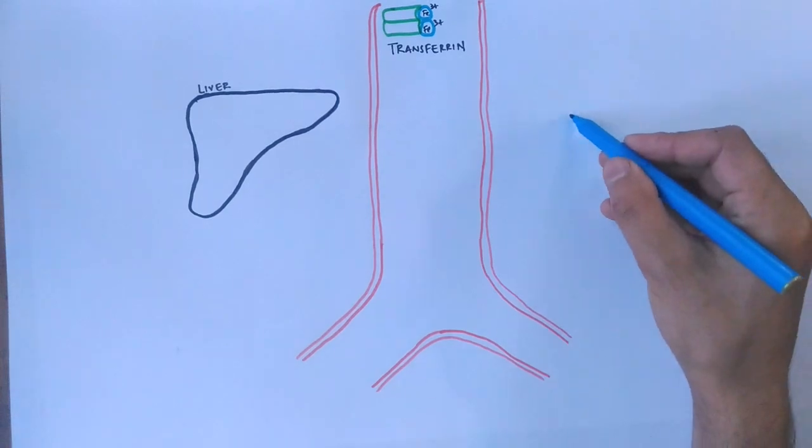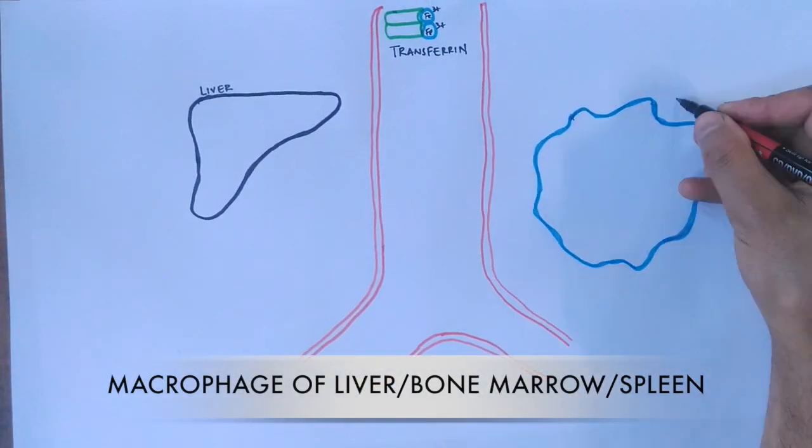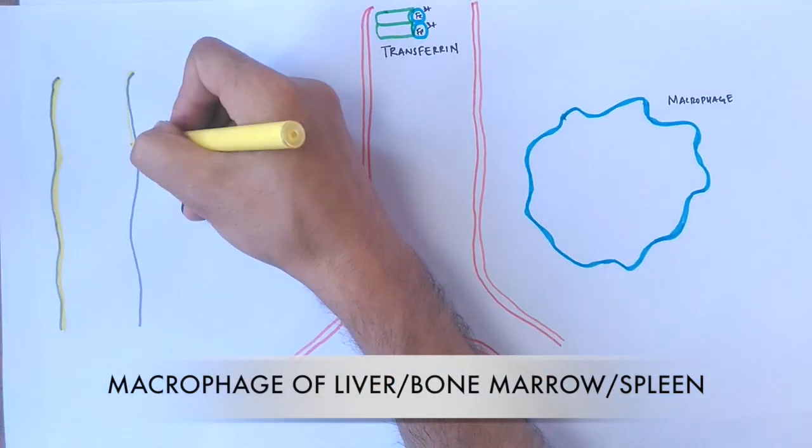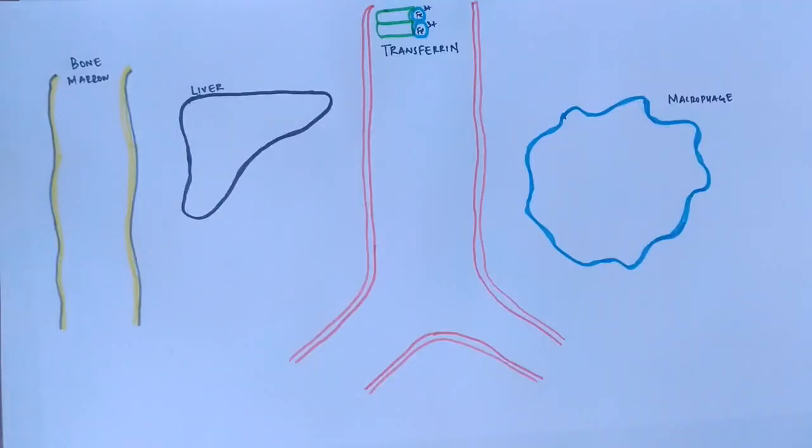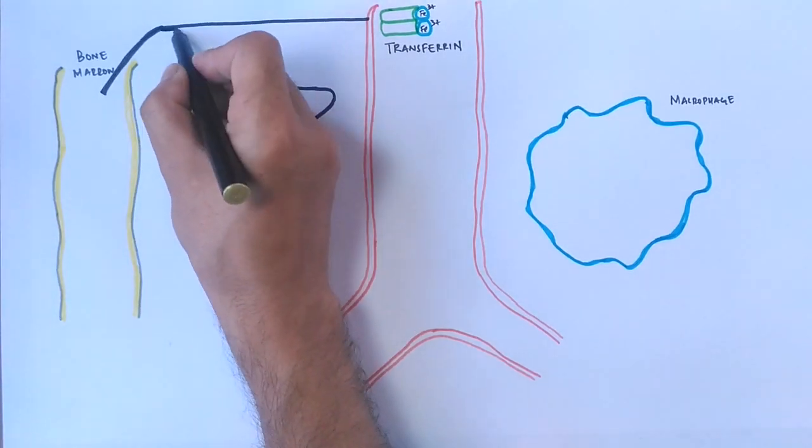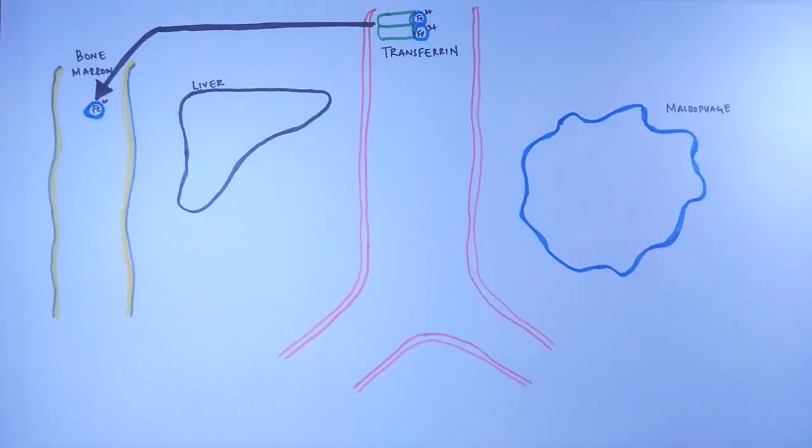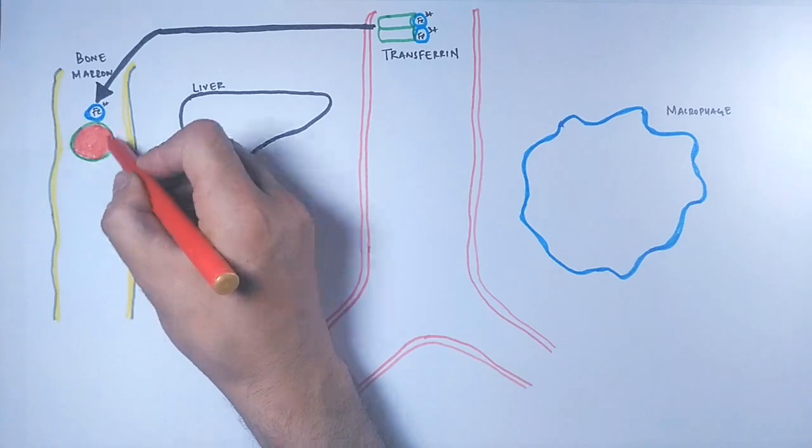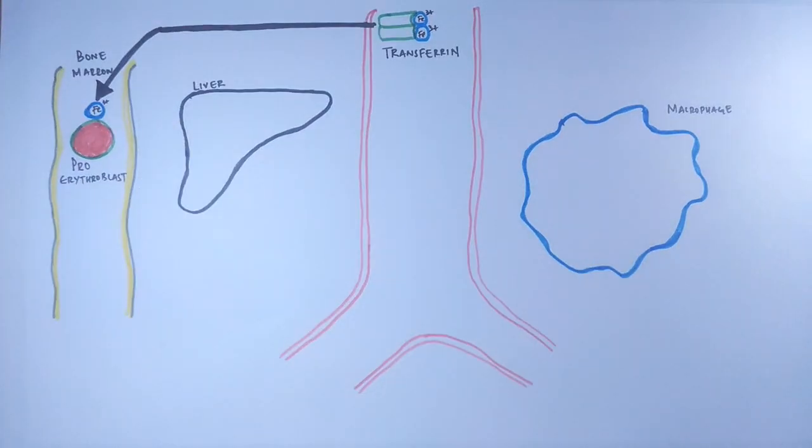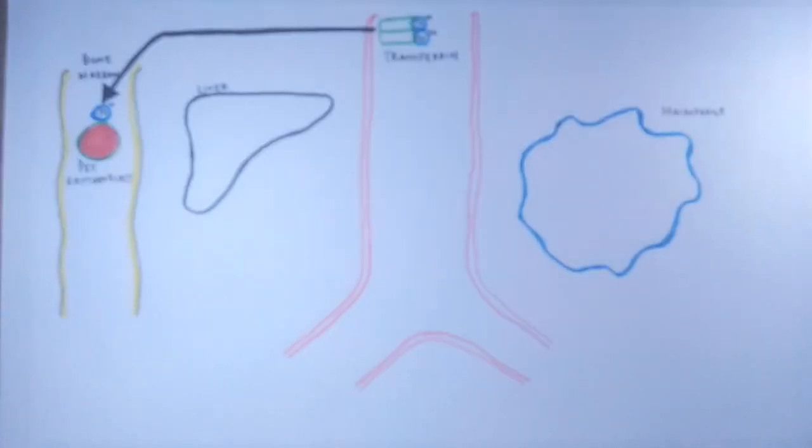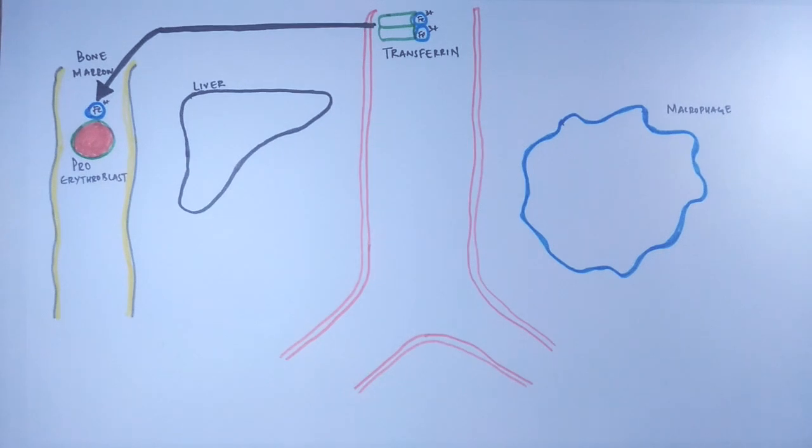To understand it diagrammatically, we have a liver on the left and a macrophage cell on the right, and also a bone marrow which plays a major role in iron physiology. First, the iron-transferrin complex transports the bound iron to the bone marrow, where pro-erythroblast cells receive the transferrin molecule via transferrin receptors. Upon reception, the iron is used for the erythropoiesis process. To make hemoglobin, iron is needed since hemoglobin has a heme structure made up of iron. Finally, we get erythrocytes.